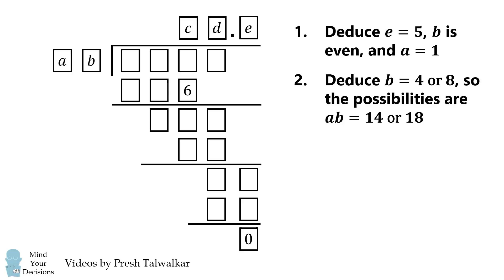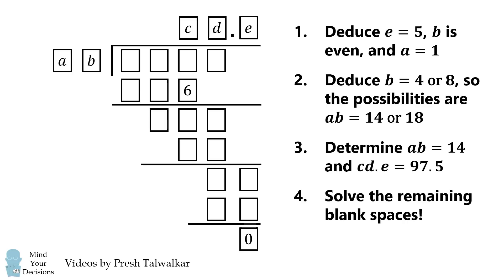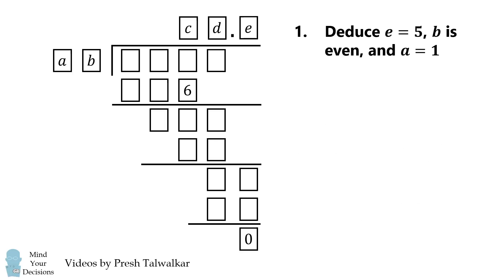Then we'll deduce that B is either 4 or 8, so AB is either 14 or 18. Then we'll determine AB equals 14, and CD.E equals 97.5. Finally, we'll solve for the remaining blank spaces. Let's get started.